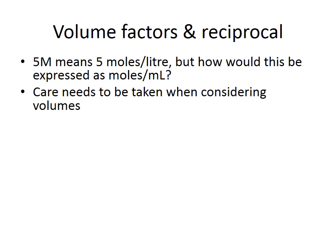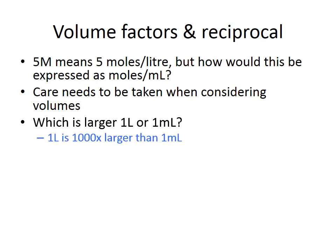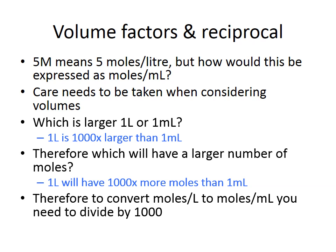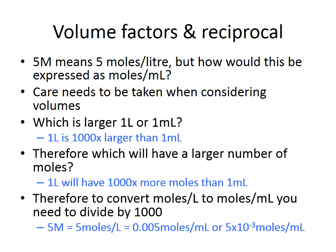Another example involves volume factors and reciprocals. Five molar means five moles per litre — but how is this expressed as moles per milliliter? One litre is one thousand times larger than one milliliter, so one litre contains one thousand times more moles than one milliliter. Therefore, converting from five moles per litre to moles per milliliter, you divide by one thousand. So five molar equals five moles per litre, which equals 0.005 moles per milliliter, or 5 × 10⁻³ moles per milliliter.